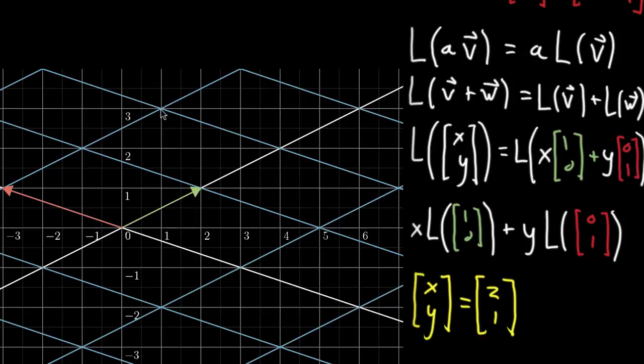Okay, so in terms of the old grid, right, the original one that we started with, it's now at the point 1, 3. This is where we've ended up. But importantly, I want you to notice how it's still 2 times that green vector plus 1 times that red vector. So it's satisfying that property that it's still x times whatever the transformed version of that first basis vector is plus y times the transformed version of that second basis vector.